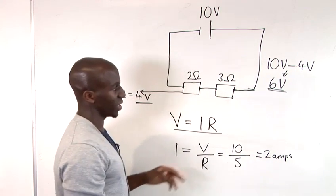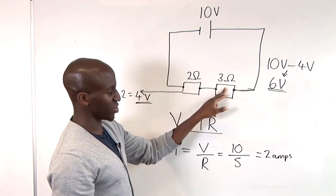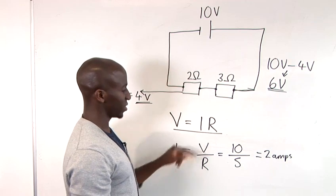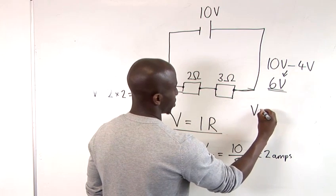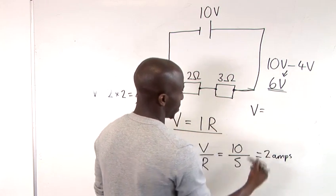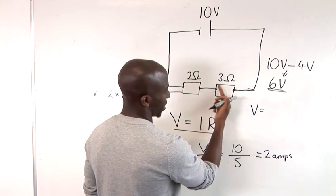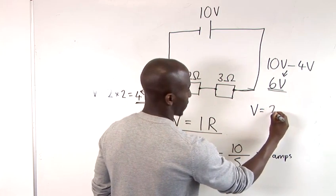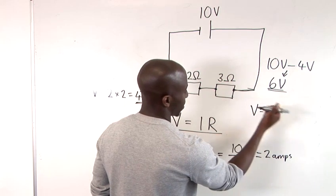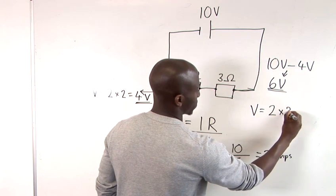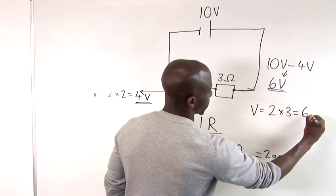Now the second way is obviously then just to use the equation, which would have just been this. And then we would say the voltage here is equal to the current multiplied by the resistance. And we have 2 amps times 3 ohms. And that again gives you 6 volts. And that's pretty much how to calculate voltage drops.